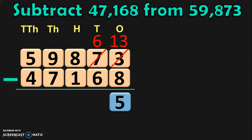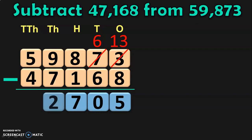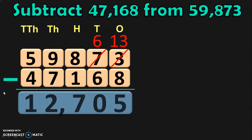Hope you understood how we are doing the regrouping or borrowing concept. Next, move on to the tens place. Here, we have 6 minus 6 now. When the number is subtracted from itself, you get 0. Next, move on to the hundreds place. 8 minus 1 is 7. In the thousands place, we have 9 minus 7. 9 minus 7 is 2. And in the ten thousands place, we have 5 minus 4, which is 1. So, the difference between the two numbers, 59,873 and 47,168, is 12,705.